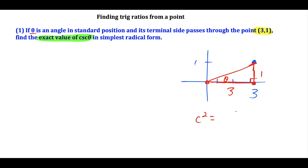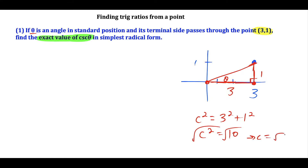If we call the hypotenuse c, we can say c squared equals 3 squared plus 1 squared. That tells us c squared equals 9 plus 1, which is 10. Taking the square root of both sides gives us c equals square root of 10. So now we know the length of the hypotenuse, and all we have to do is use this right triangle to find cosecant theta.